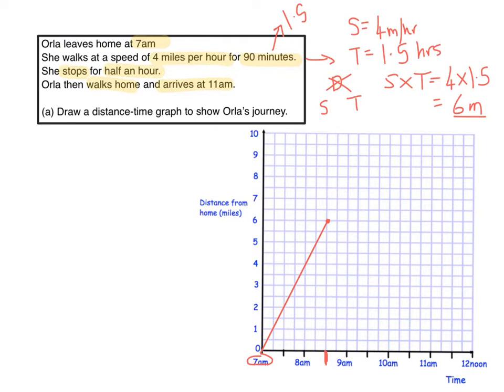So the next bit is that she stops for half an hour. So from 8:30, so from here, from here till 9:00, that's stopping for half an hour. And again I can draw that line on. And then the last bit, Orla walks home and arrives at 11am. So I'm going to draw my line from where I finished all the way to 11am. There we go, and that's my graph.